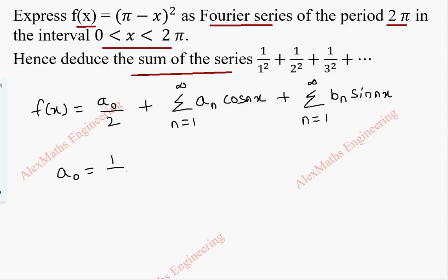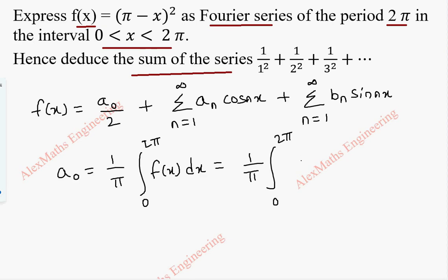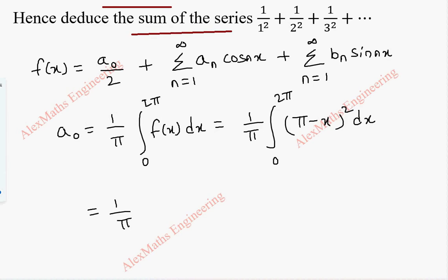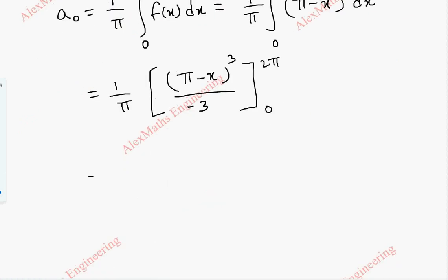To find a₀, we use (1/π) integral from 0 to 2π of f(x) dx. So this is (1/π) integral from 0 to 2π of (π − x)² dx. When we integrate (π − x)², it becomes (π − x)³. There is a coefficient for x which is minus 1, so we divide by that, giving denominator minus 3, with limit 0 to 2π.